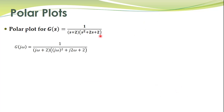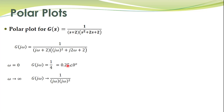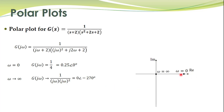Another transfer function and its frequency response, obtained by substituting s equal to j omega. For omega equal to zero, we get 1 divided by 4, which is 0.25 at angle 0 degrees. For omega equal to infinity, we have j omega and j omega squared in the denominator, giving magnitude 0 at angle minus 270 degrees.